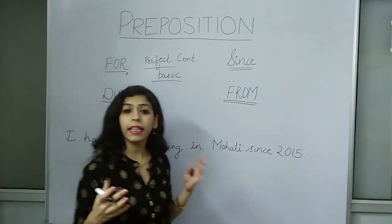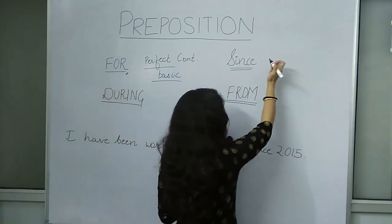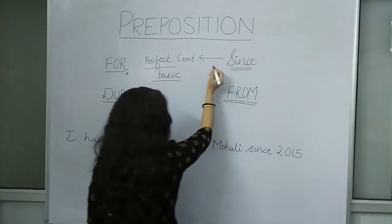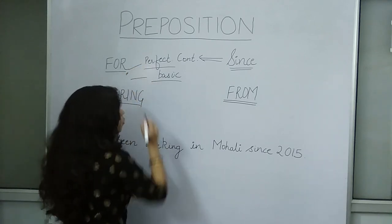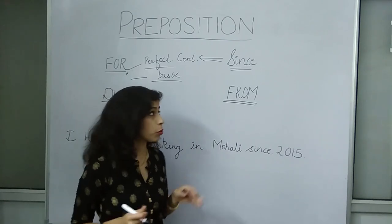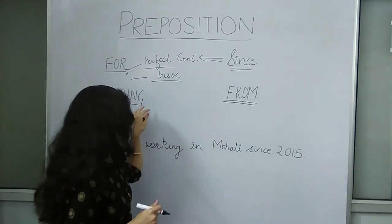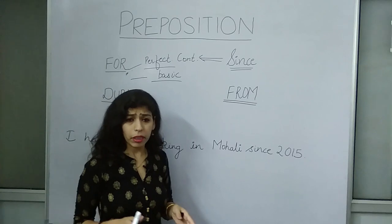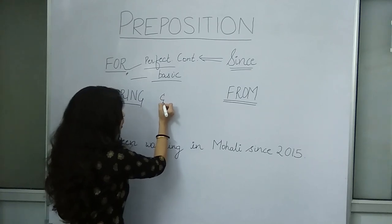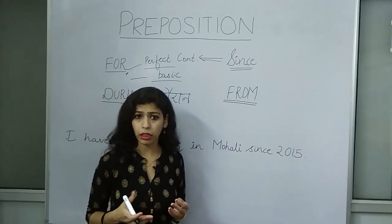What does 'for' mean? If we do something for something, that is 'for.' Now, proceeding to 'since' — since we use only with perfect continuous tense. So now you are getting to know that since is used only with perfect continuous tense, not in basic sentences. During means 'during a period,' whereas from means when we are telling a starting point in time, we use 'from.'